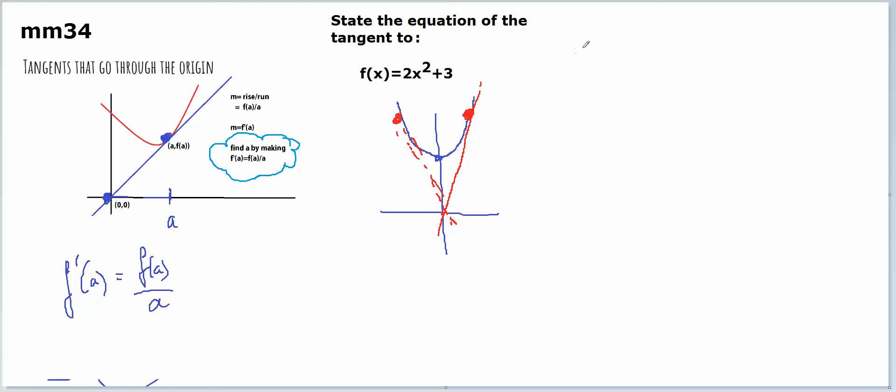I need the derivative of the parabola. So f dash of x equals 4x, which means f dash of a equals 4a. So the gradient of my tangent is 4a.